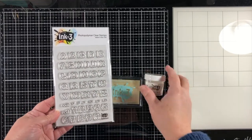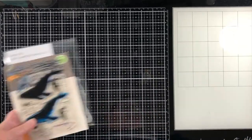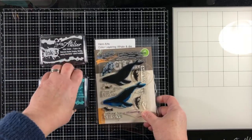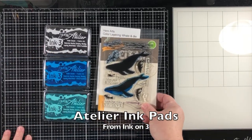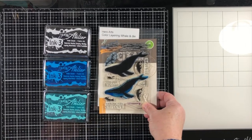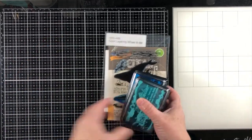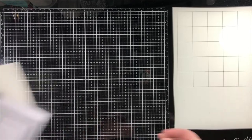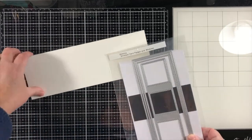I'm using the Fat Alphanumeric stamp set from Ink On 3 with some embossing ink and embossing powder, and then I'm going to use some Atelier ink pads in three different colors with a color layering stamp from Hero Arts.